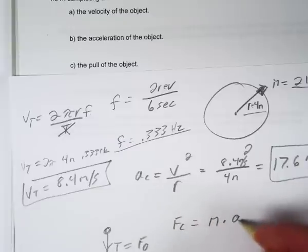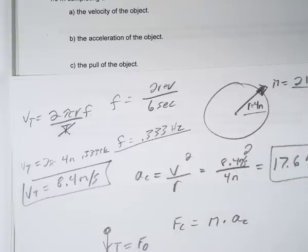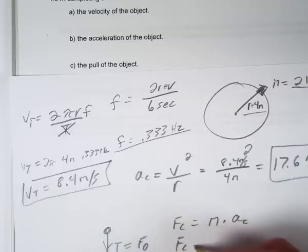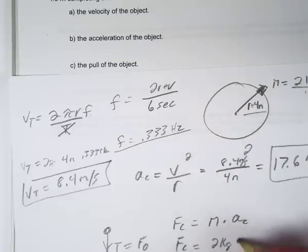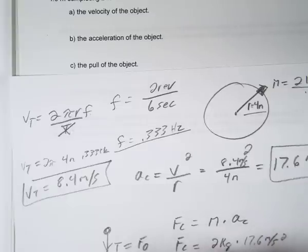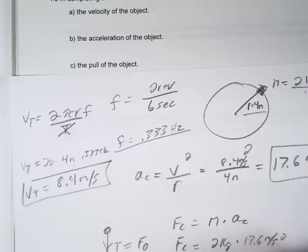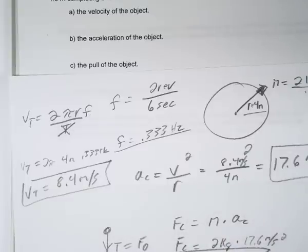Centripetal force equals mass times centripetal acceleration. We already know the centripetal acceleration, so don't make it hard. Our mass is 2 kilograms, centripetal acceleration is 17.6 meters per second squared, so our centripetal force comes out to 35.2 Newtons.